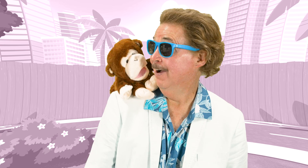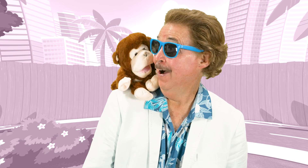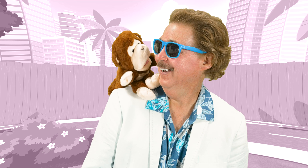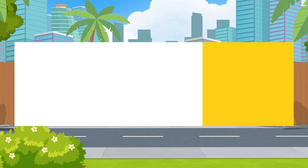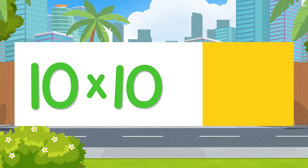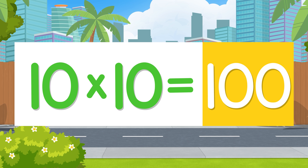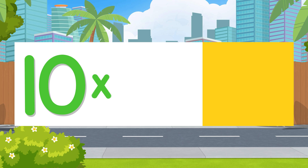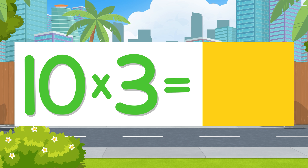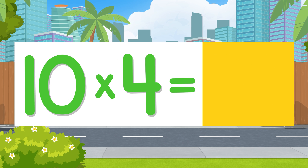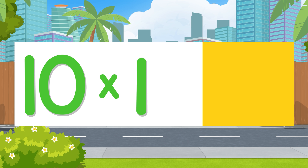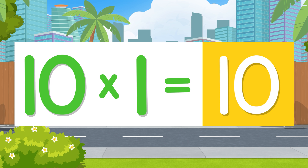Now say the answer before me! Now say the answer before me! Ten times nine is 90. Ten times ten is 100. Ten times three is 30. Ten times four is 40. Ten times one is 10.